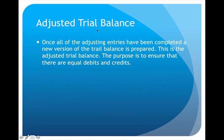Once all the adjustments have been completed, we will have a trial balance once again — but this is a new version called the adjusted trial balance. The trial balance as originally presented is presented again, now reflecting a new total balance that shows the effect of all the adjusting entries. The purpose remains the same: it serves as a system of checks and balances to make sure we have equal debits and equal credits.